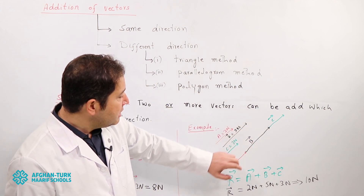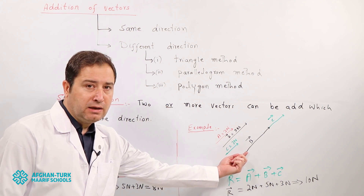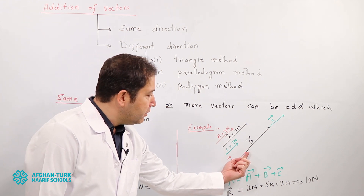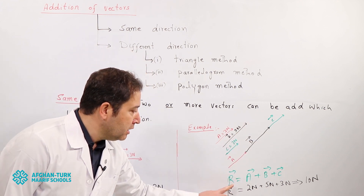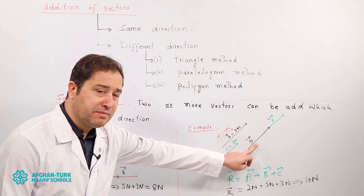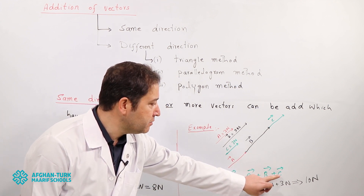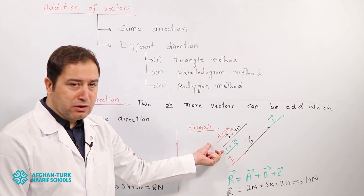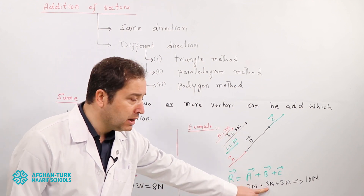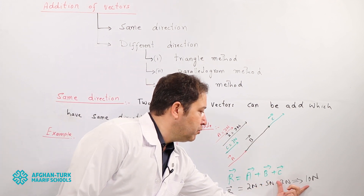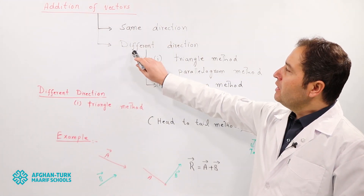If we add three vectors with the same direction, we use the same method — joining the head of the first vector to the tail of the second one and combining them, because all three vectors have the same direction. Mathematically and graphically, vector A plus vector B plus vector C, with magnitudes 2 Newton, 5 Newton, and 3 Newton respectively, gives a resultant vector of 10 Newton.